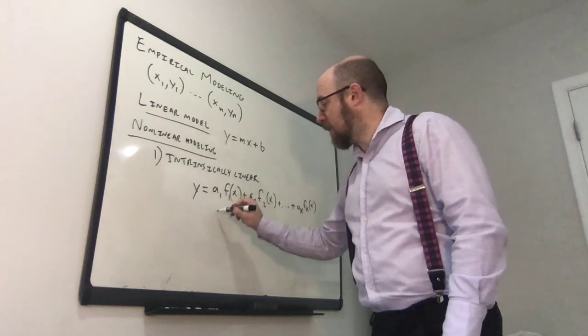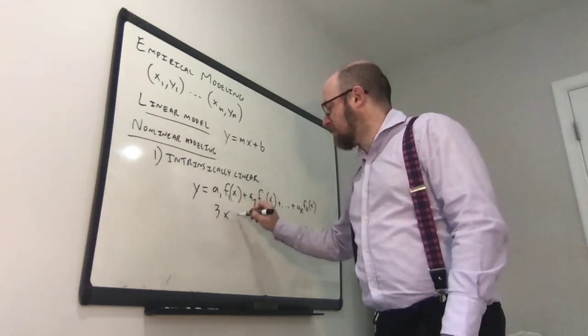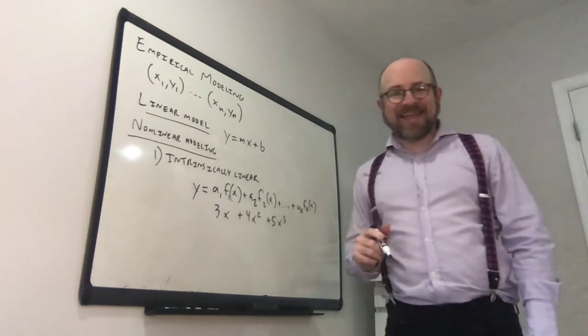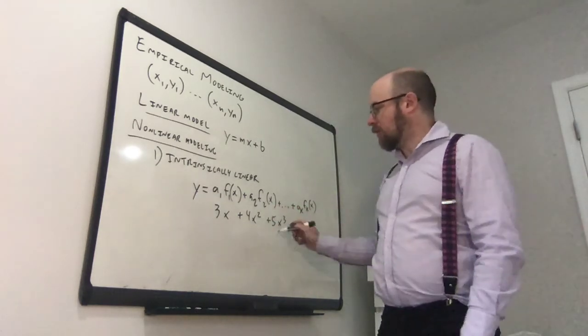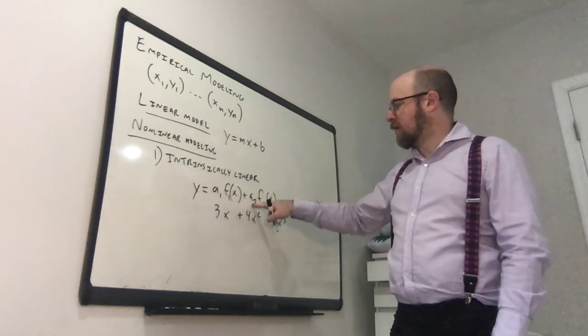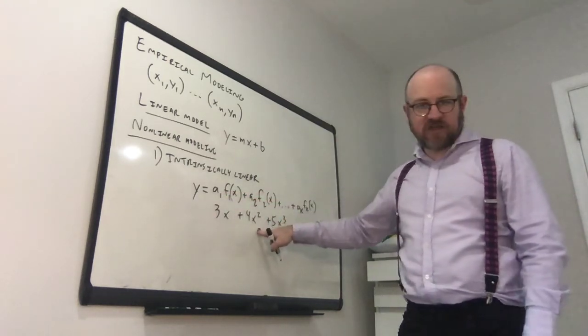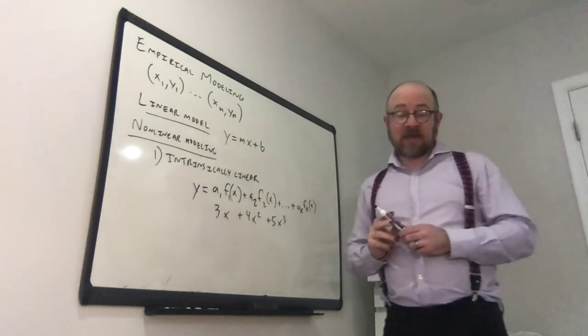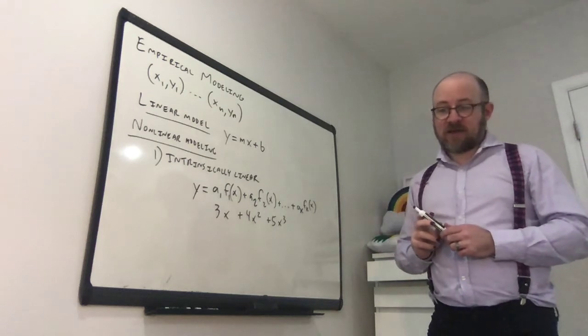If you had something like 3x plus 4x squared plus 5x to the third, this is intrinsically linear, right? Because each of these we've got a constant times some function of x, constant times some function of x, which is x squared in this case, or x cubed. And these are actually relatively easy to fit.